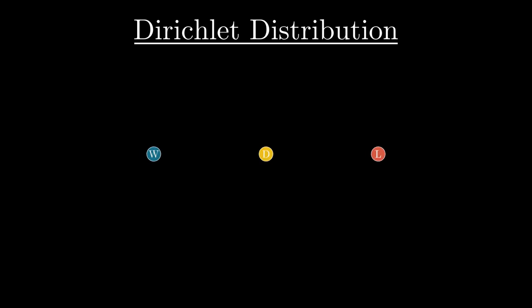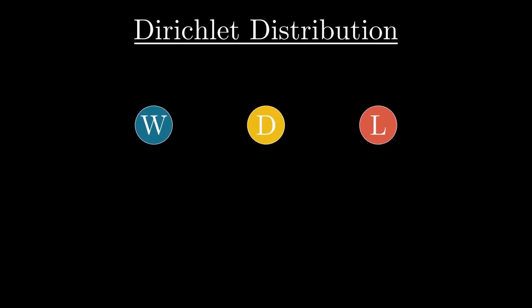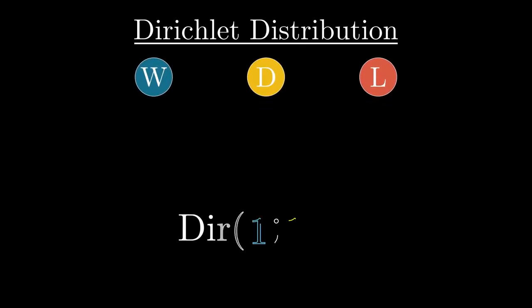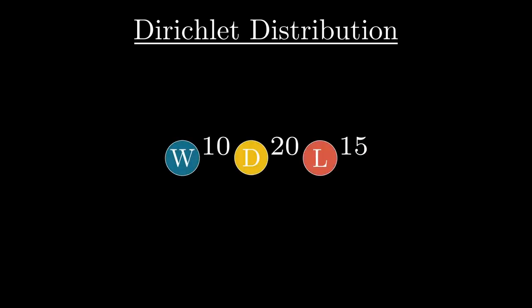Beta distribution, generalized to more than two categories, is called Dirichlet distribution. For example, if A and B played a series of games, in which each game could result in a win for either player, or could end in a draw, we would start with Dirichlet(1,1,1), which signifies a uniform distribution. For example, let's say player A won 10 games, player B won 15 games, with 20 games ending in a draw, the parameters of the distribution becomes (11,21,16).